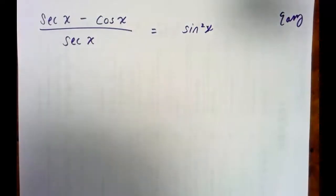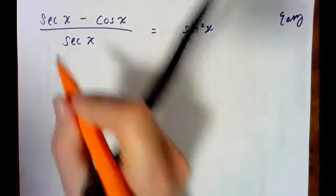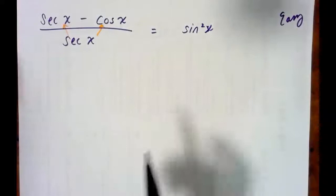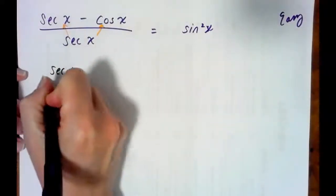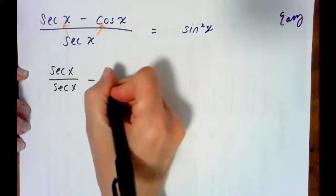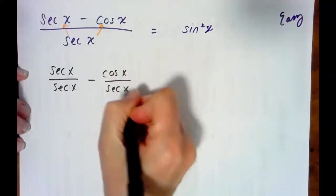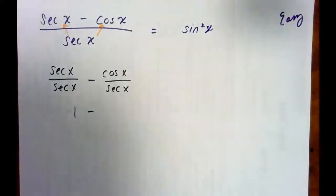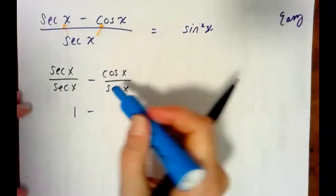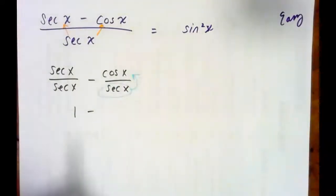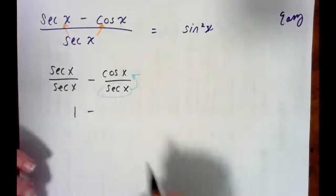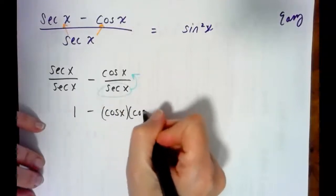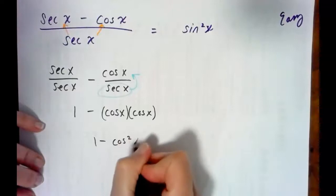I'm going to attack this one using secant as the common denominator for both terms in the numerator. So secant x over secant x minus cosine over secant. Secant over secant is 1, and as we talked about in class, we can move that secant x to the top using the reciprocal identity. The reciprocal of secant is cosine, so we end up with cosine times cosine, which is cosine squared.